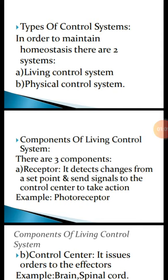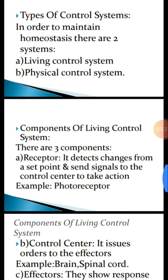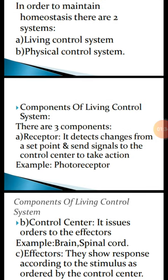What are the components of the living control system? There are three components or parts. First is the receptor or sensor. It detects changes from a set point and then sends signals to the control center. For example, photoreceptors — photo means light — are those receptors which receive light, and chemoreceptors, which detect chemical signals.